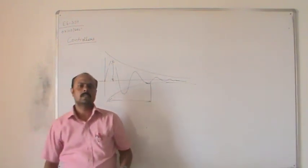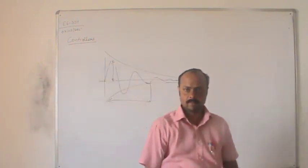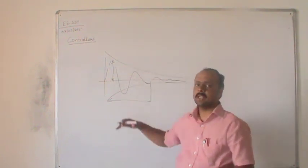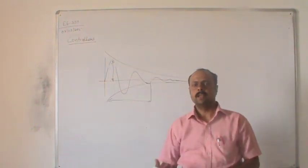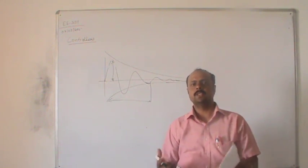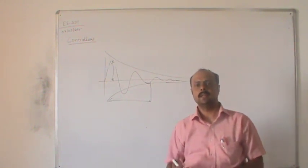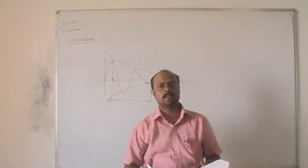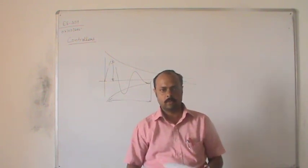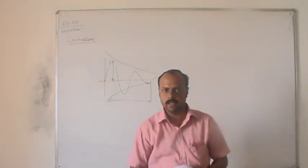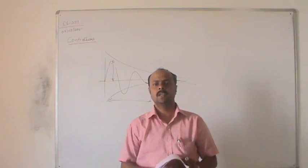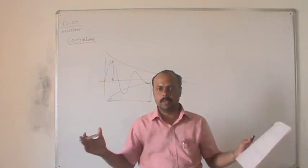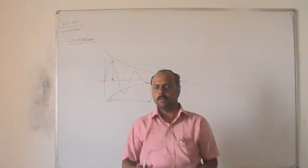Basically, all control systems are proportional in nature. There are also derivative controllers, integral controllers, and the combination of these two. Since proportional is always present, we will have PI (proportional and integral), PD (proportional and derivative), and if you want to improve the complete system, PID.